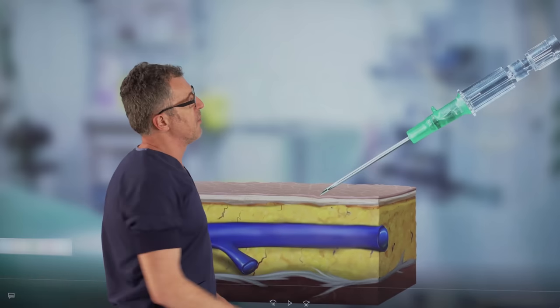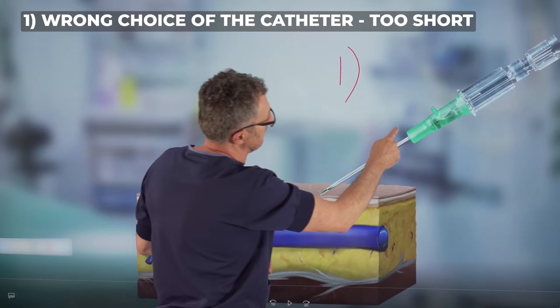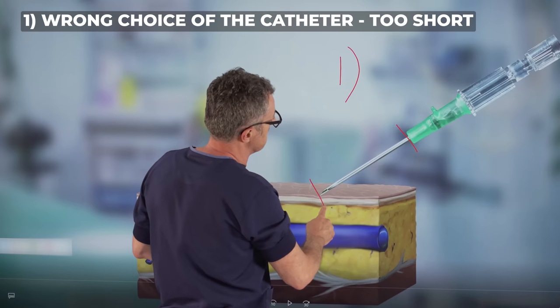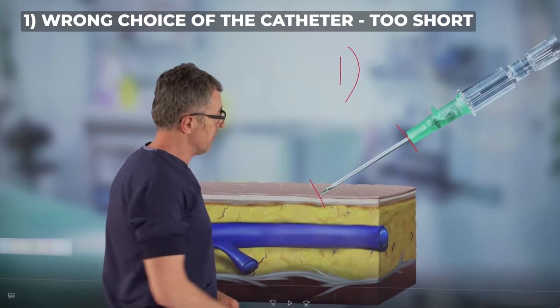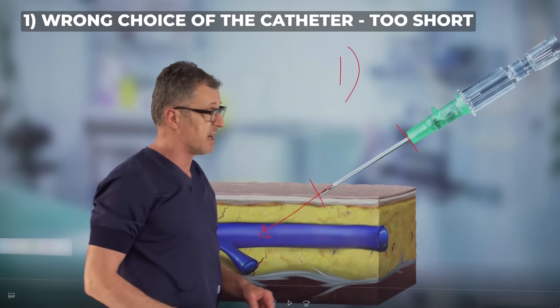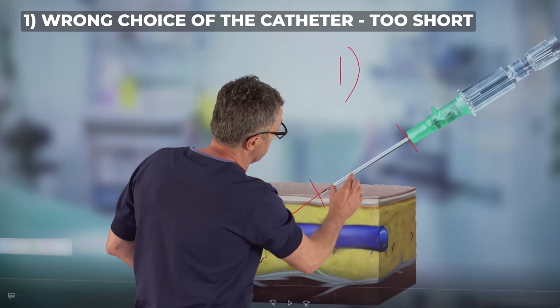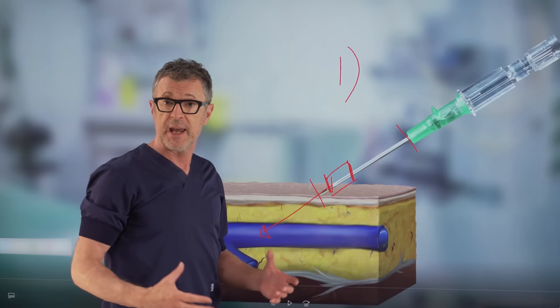Now notice how here we have this chamber and this chamber is where the blood will first appear. So we're using this chamber to monitor when the needle tip enters inside the vein. That would be an indication that it's time to lower the angle, advance the needle catheter system deeper and take the needle out to leave the catheter inside the vein. So here's mistake number one.